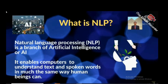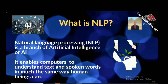Natural language processing is a branch of artificial intelligence, or AI. AI is a branch of computer science. This NLP enables computers to understand text and spoken words in much the same way human beings can.